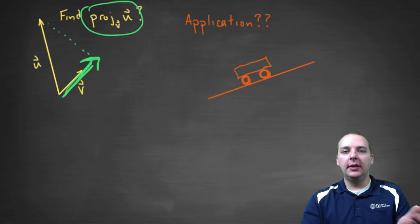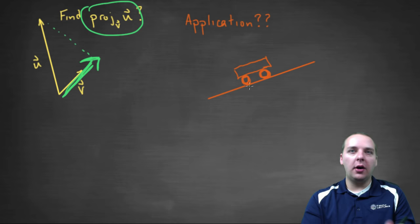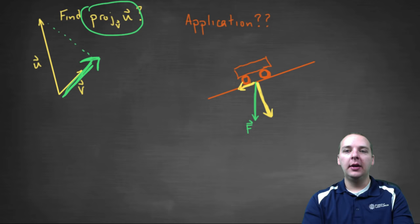A lot of these examples will have something, a truck, a boat, a box, a something sitting on a hill. Now obviously due to gravity, there's a force vector that's applied to this object on the hill and this force vector goes straight down.